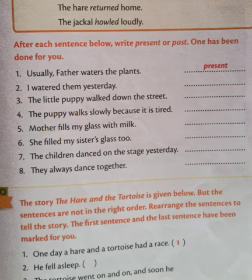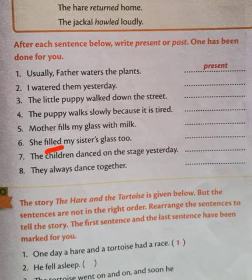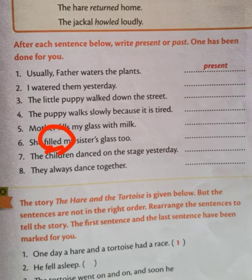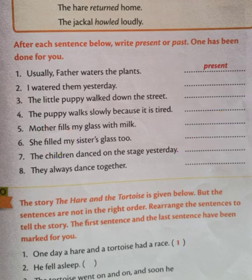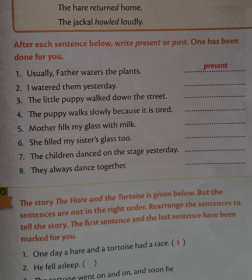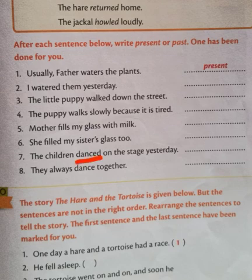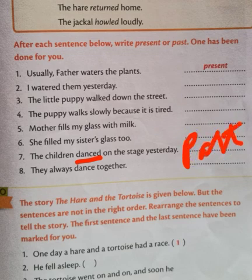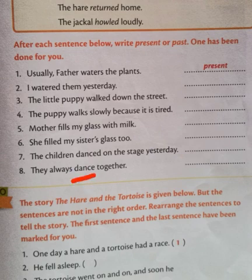Number six: 'She filled my sister's glass.' The verb is 'filled' — can you guess which form this is? Yes, this is the past form of the verb, so we write 'past.' Number seven: 'The children danced' — past tense. And number eight: 'They always dance together' — 'dance' is the present form of the verb, so this is present tense.